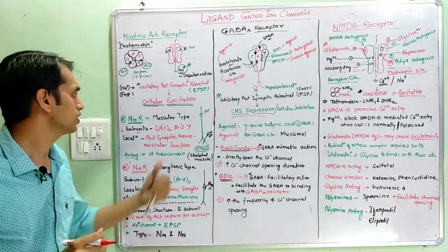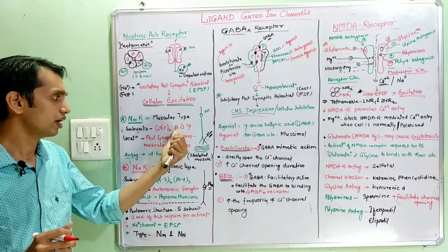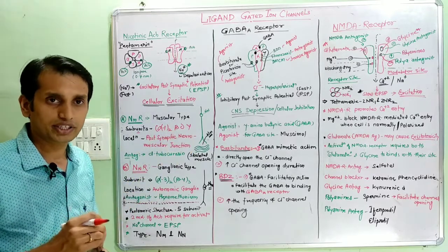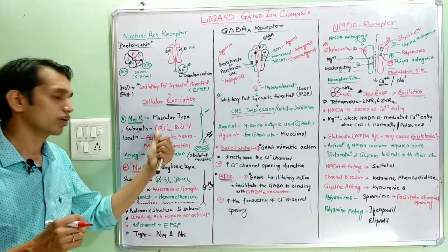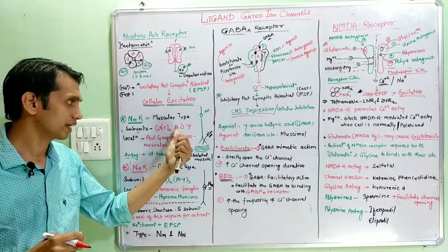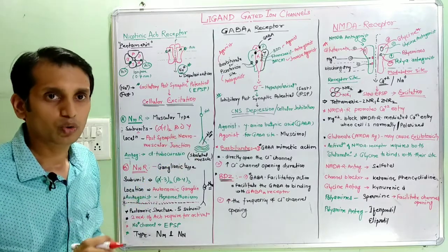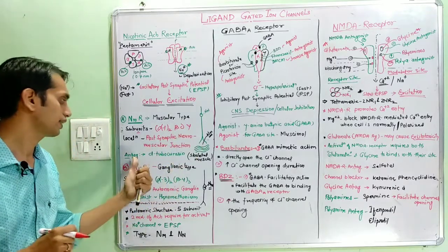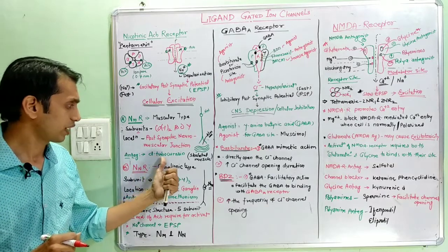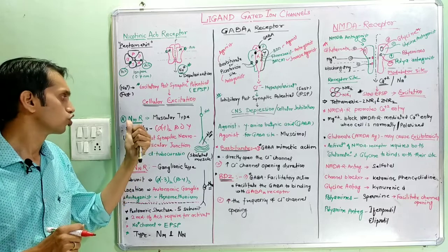NM receptors are mainly formed by alpha 1, alpha 2, beta, delta, and gamma subunits — a pentameric structure. The antagonist for NM receptors is D-tubocurarine, which acts at neuromuscular (NM) nicotinic receptors.